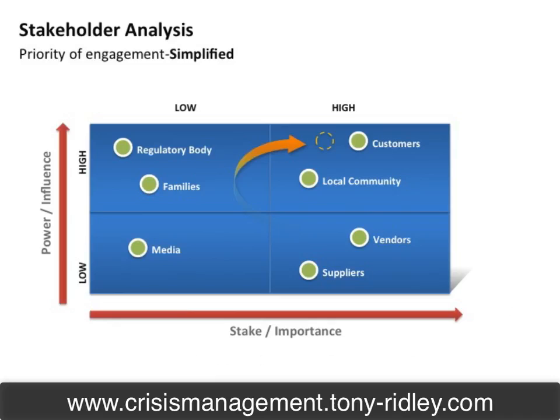So in this area here, we're talking about the priority of engagement — a very simplified battle map for something very simple and rudimentary in terms of identifying quickly and efficiently who one needs to communicate with. If we use an X and Y axis here, we have power and influence and/or stake or importance.